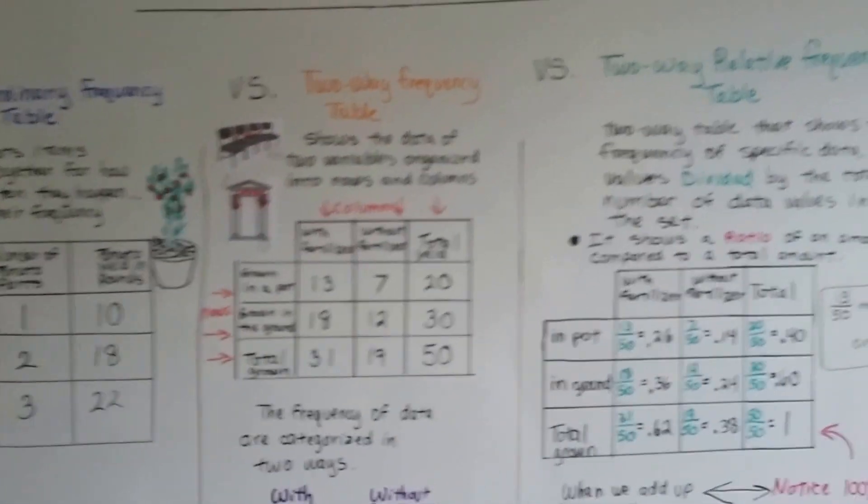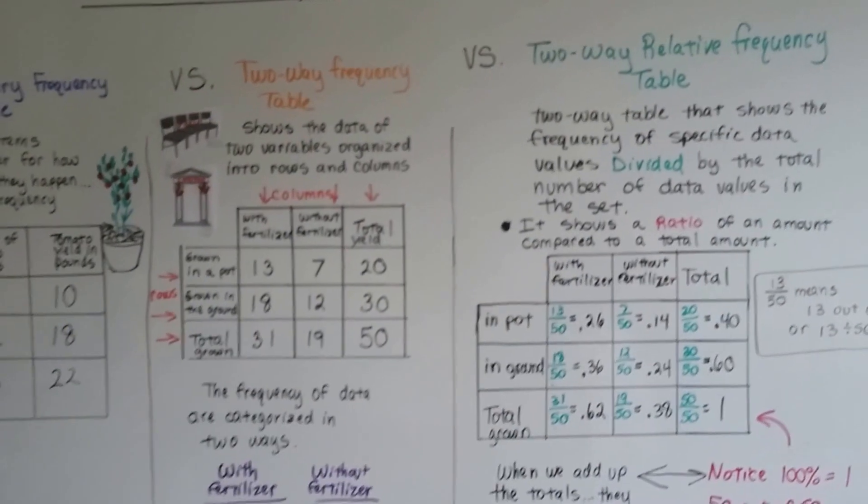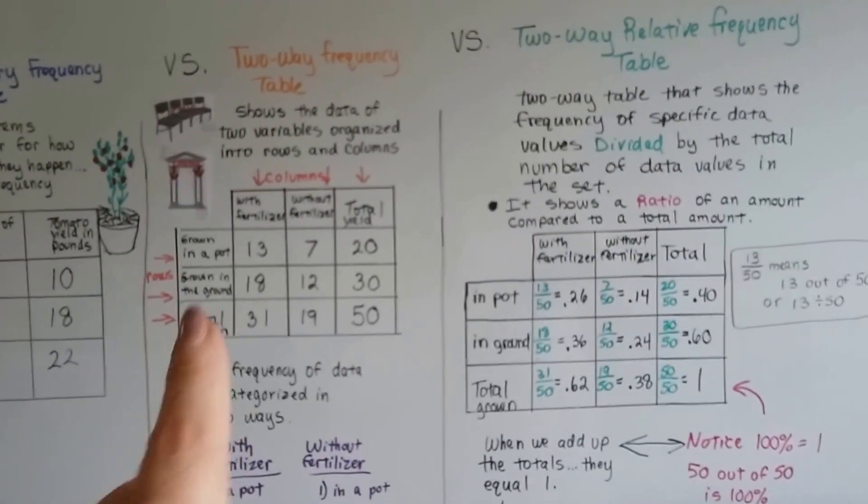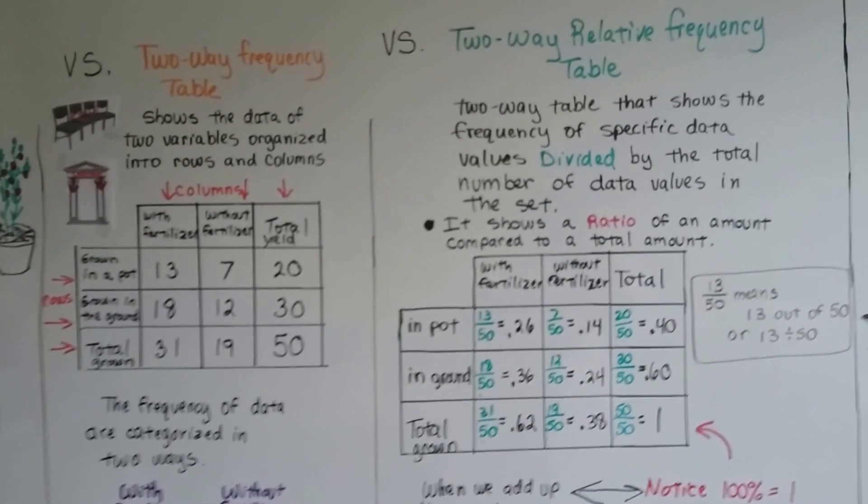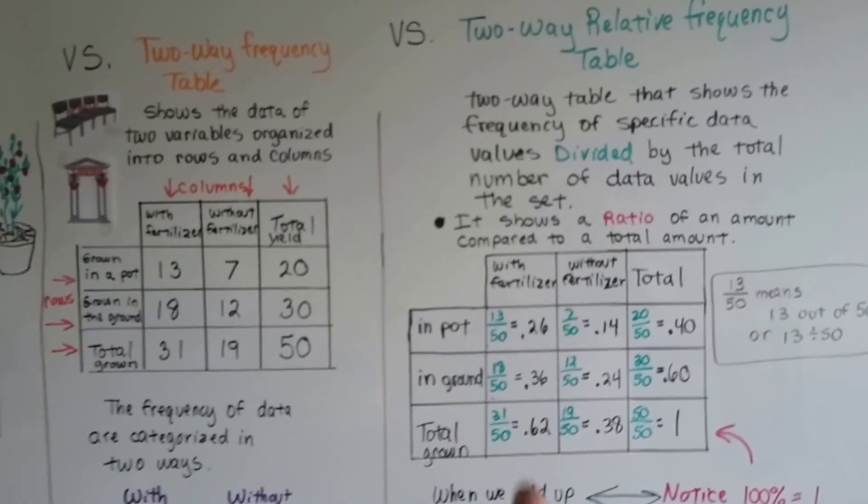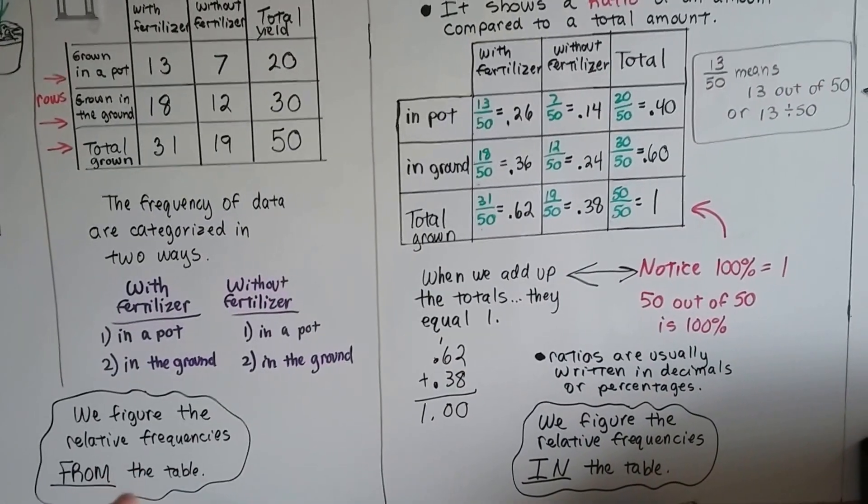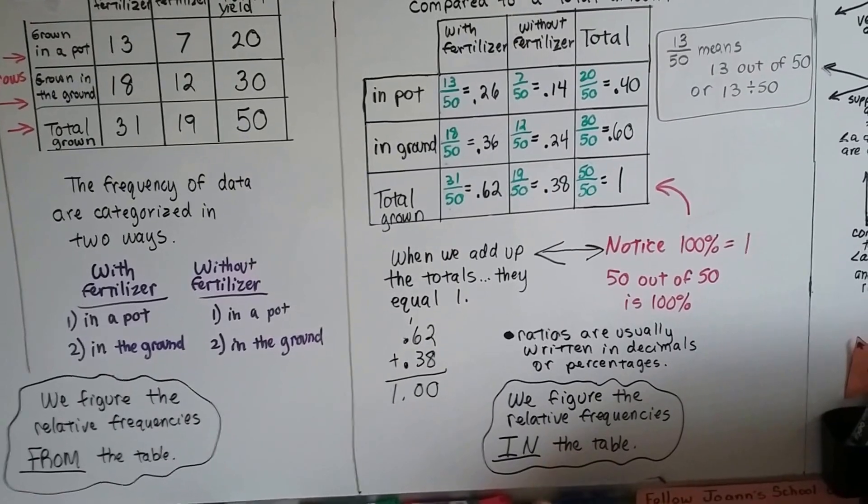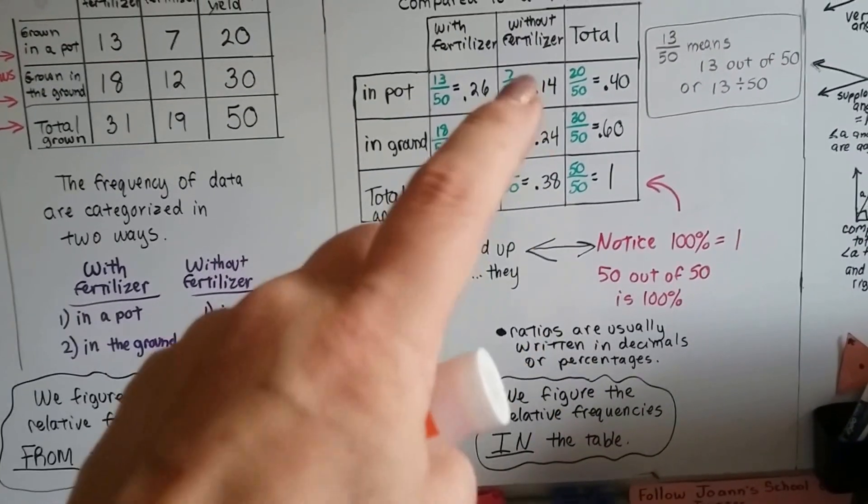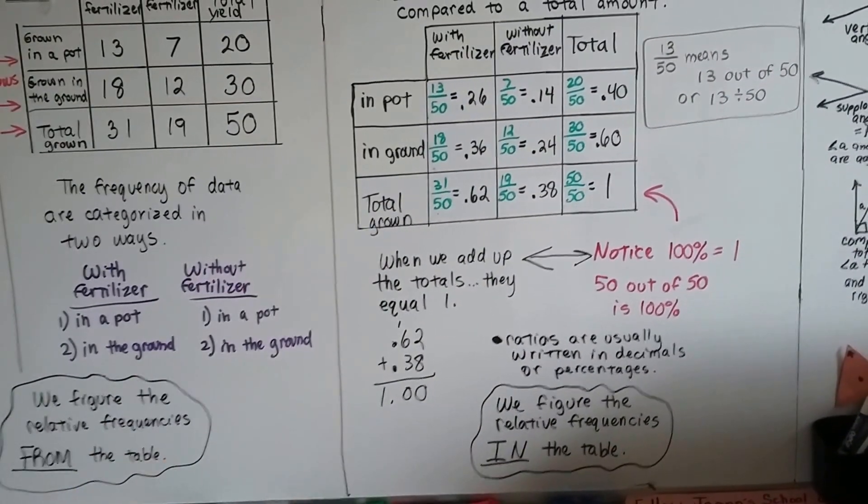So now, when we compare it to a two-way relative frequency table, now you can see there's a really big difference because it looks like there's a lot more information here, isn't it? Well, from this table, we figured what the relative frequencies are. In this table, we're going to figure the relative frequencies in the table.